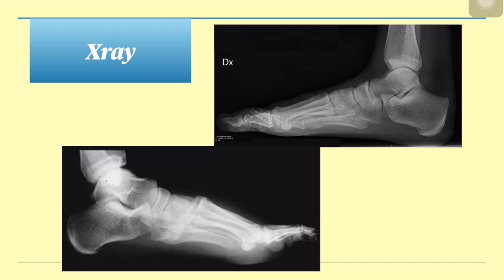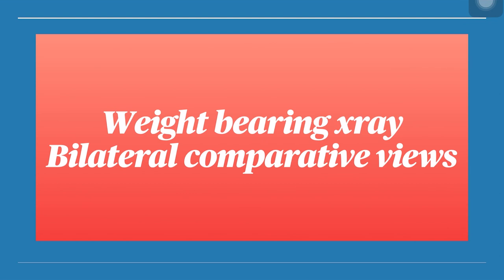On the lateral view, this is the first metatarsal, cuneiform, navicular, and talus. On the normal lateral view the alignment is maintained. On the injured patient's X-ray, there is dorsal subluxation of the metatarsal — that is another sign of Lisfranc injury. These X-rays were all taken in non-weight-bearing. Now, what is the importance of weight-bearing X-rays and bilateral comparative views?